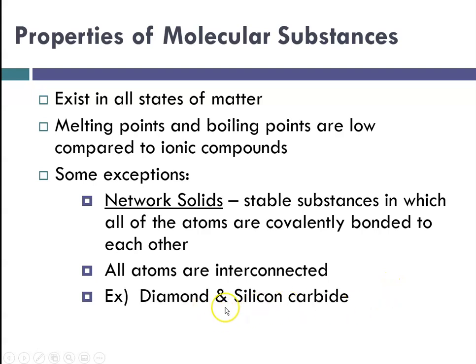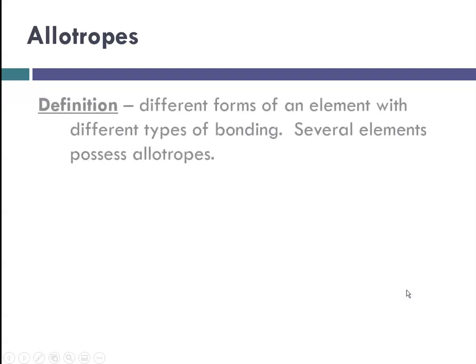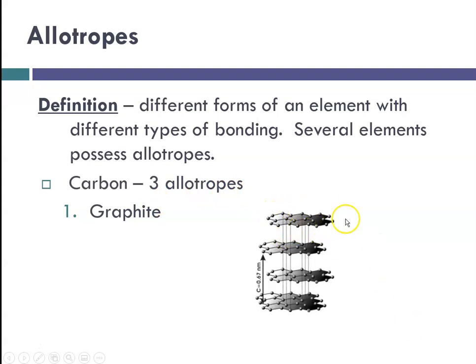Two examples of network solids would be diamond and silicon carbide. We also talk in this portion of the chapter about allotropes. Allotropes are different forms of an element, and they're different because they have different types of bonding. Several elements have allotropes, but the one we focus on in this chapter is carbon. Carbon has three allotropes. The first one is graphite, and with graphite, all that's present is carbon, but you have these plates that are attracted to one another — they're actually like sheets.